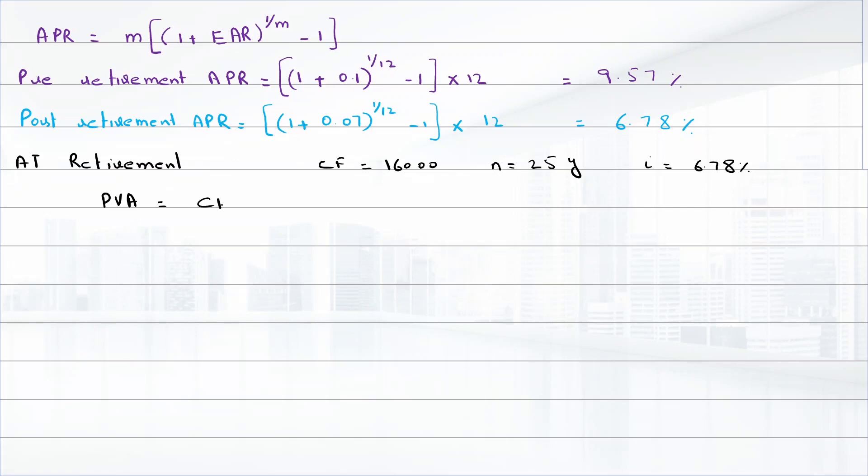That equals cash flow times [1/i minus 1/(i(1+i)^n)]. So that will be 16,000 times [1/(0.0678/12) minus 1/((0.0678/12)(1 + 0.0678/12)^300)].